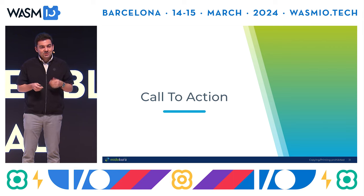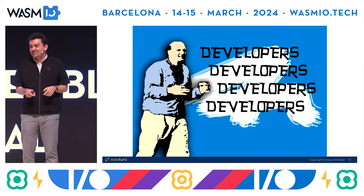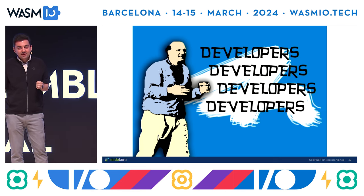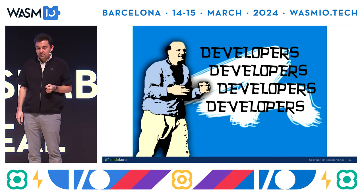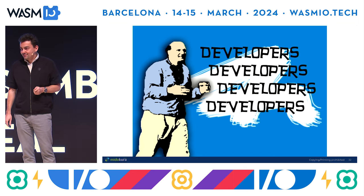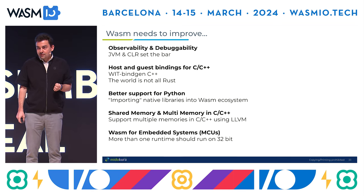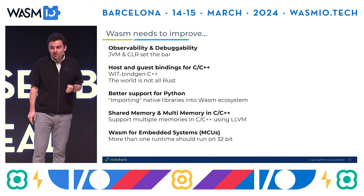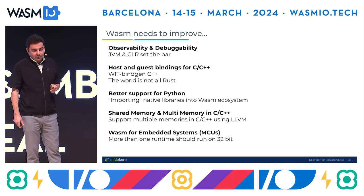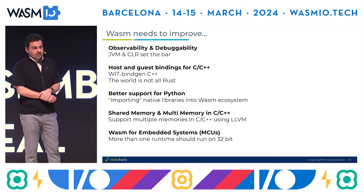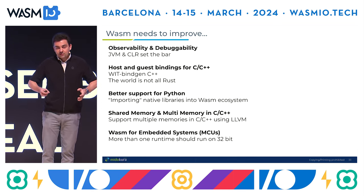So this is my call to action. What does WASM need to improve? Lots of things. Observability and debuggability — the JVM and Microsoft's .NET CLR really set the bar and we are not there at all. The host and guest bindings for C and C++: we use C++ extensively and the current bindgen is really bad. A lot of demos we saw are in Rust, and Rust is very beautiful, but we don't have any Rust — nobody writes Rust in our organization. We have C++ and lots of it.